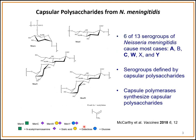The capsular polysaccharides from these different serogroups — some of which are shown here, serogroups A, C, Y, and W — I've highlighted the ones for which we currently have glyco-conjugate vaccines. The capsular polysaccharides are defined by what sugars are found in the capsule, and the enzymes that create these capsular polysaccharides are known as capsule polymerases.